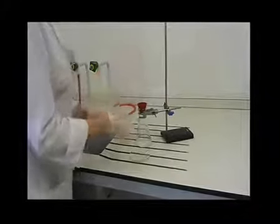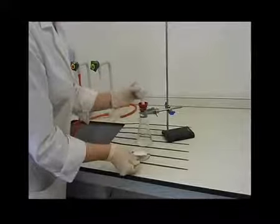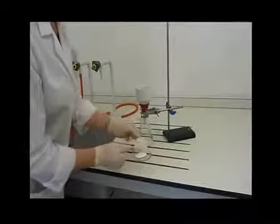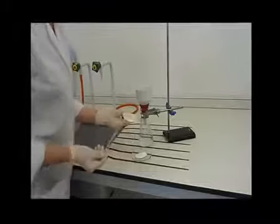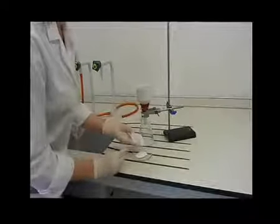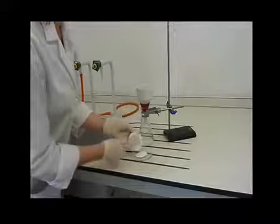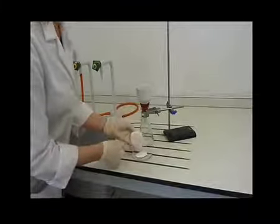Carefully transfer the solid to the pre-weighed watch glass or specimen vessel. This can be easily done by gently lifting the filter paper with the solid and placing it upside down on the watch glass. Peel away the filter paper. Check the filter funnel to ensure that the entire product has been collected.